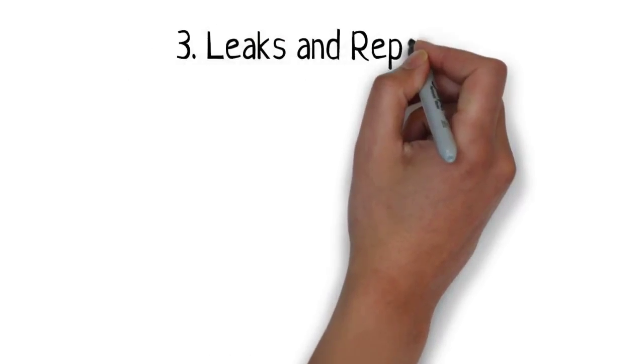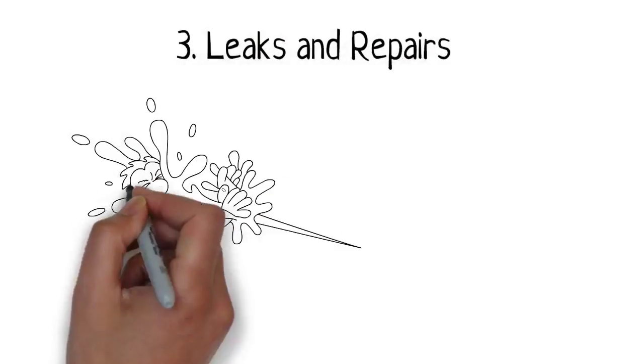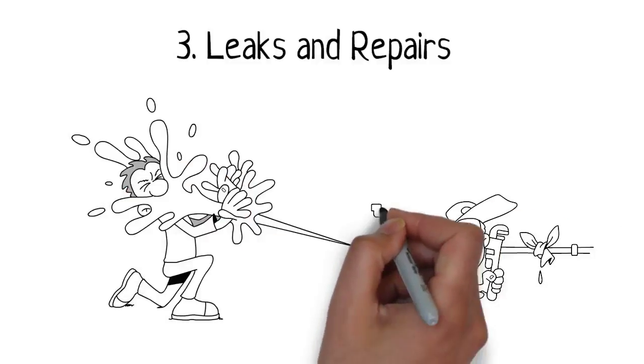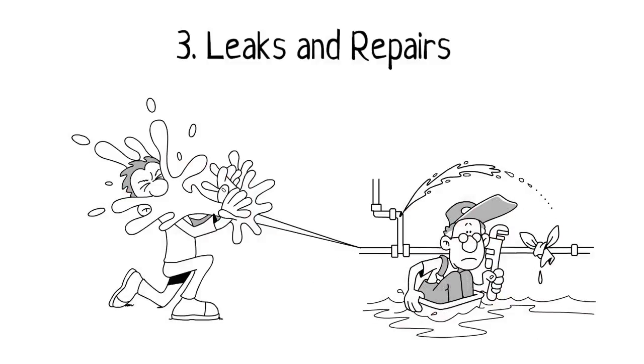3. Leaks and repairs. Small, visible problems can become large mental objections and change how someone feels about your house. Fix them beforehand.